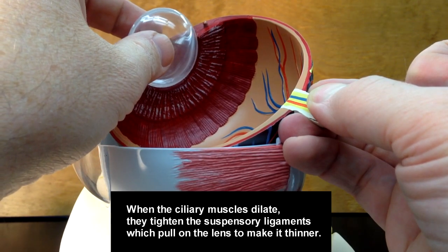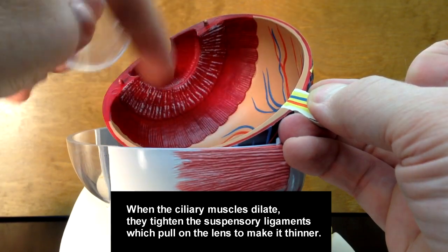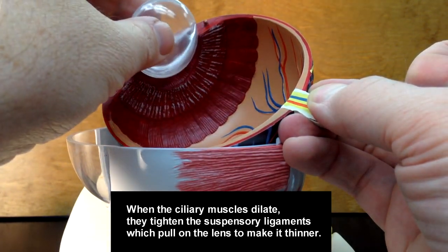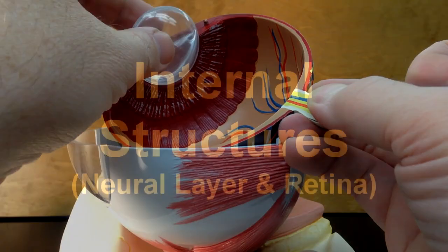But when the ciliary muscles relax, they'll dilate this opening, make it wider, pull or tighten the suspensory ligaments so that the lens will get thinner.